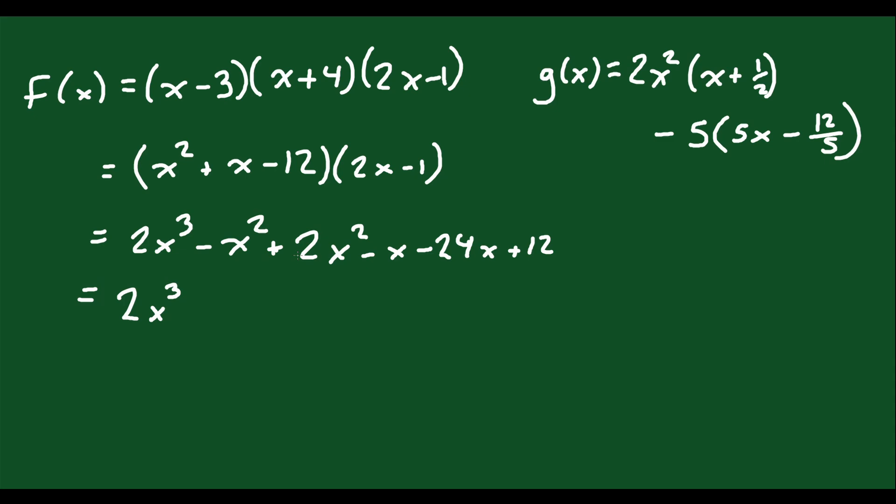Collect like terms. 2x cubed. Put those together, you get plus x squared minus 25x, those go together, plus 12.